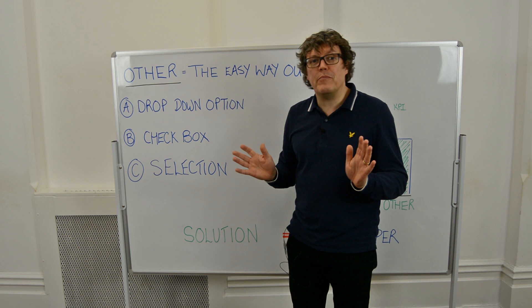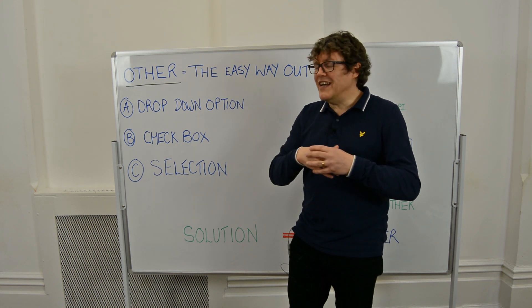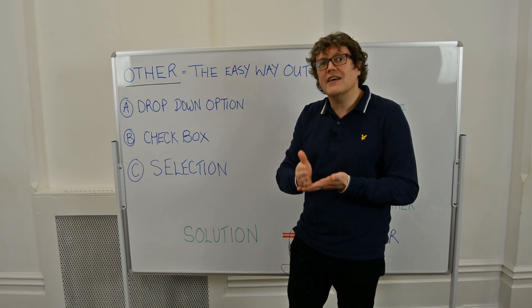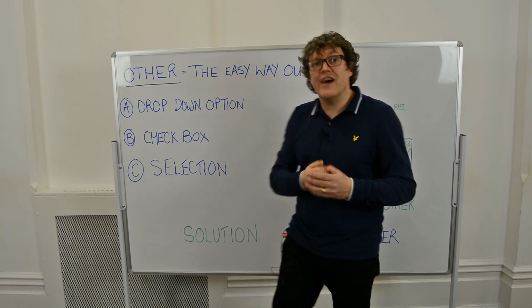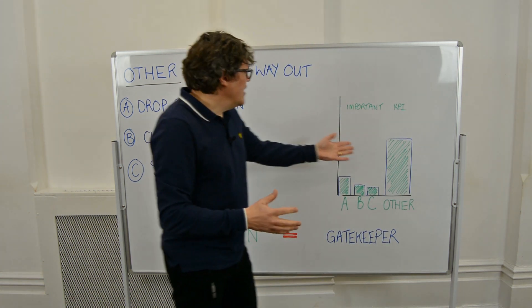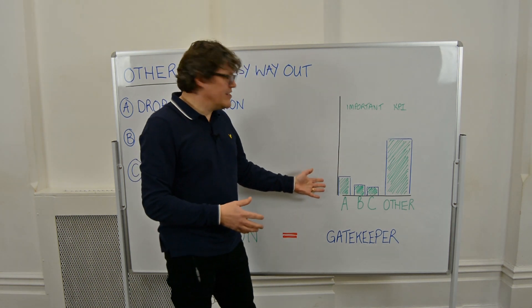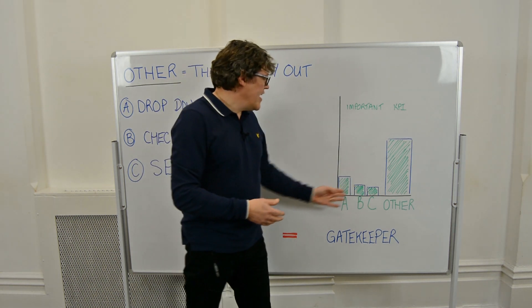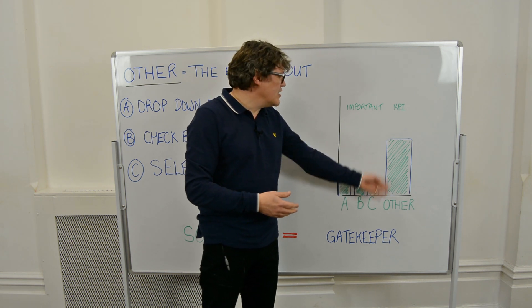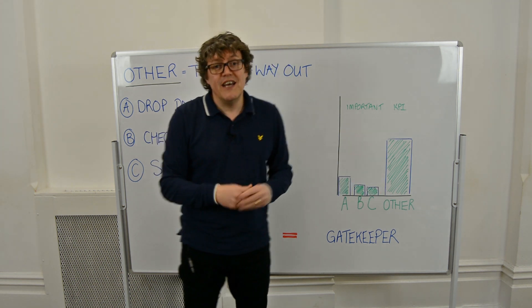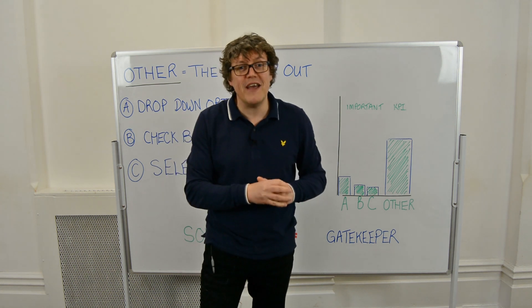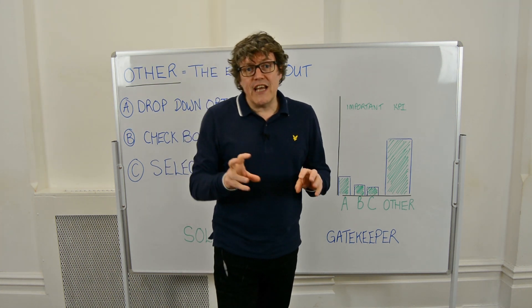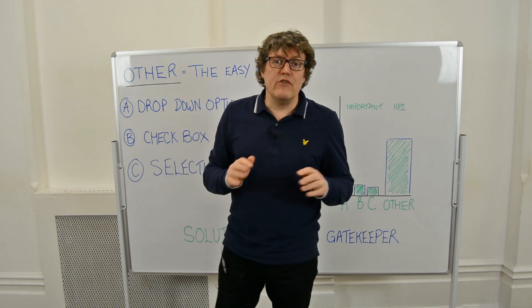It's an easy way out for people. You think you're doing great — it's the worst thing you can do. Put more thought into A, B, and C. Don't use the word 'other,' because what you end up getting is analytics like this — really important KPIs skewed by the fact that everybody picks 'other,' because they do. They're not sure, so they'll pick it. There is a light at the end of the tunnel if there's no way you can get rid of 'other.'